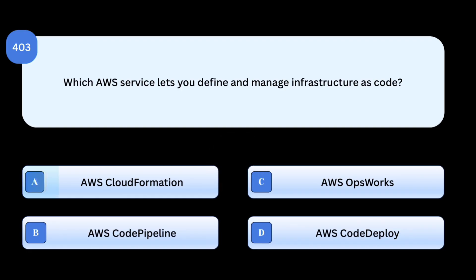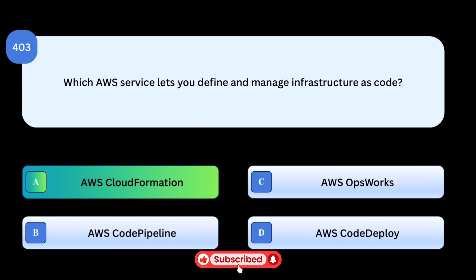Correct answer: AWS CloudFormation. AWS CloudFormation enables infrastructure as code, allowing you to define cloud resources in templates and manage them programmatically. Why others are incorrect: AWS CodePipeline manages CI/CD pipelines, not infrastructure. AWS OpsWorks uses Chef/Puppet for configuration, not IaC templates. AWS CodeDeploy focuses on application deployments, not infrastructure provisioning.